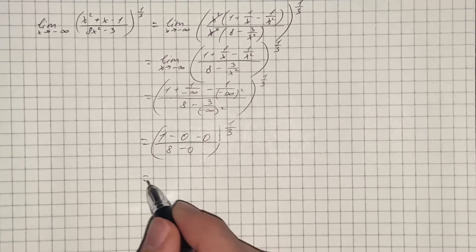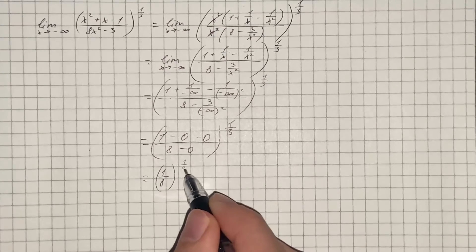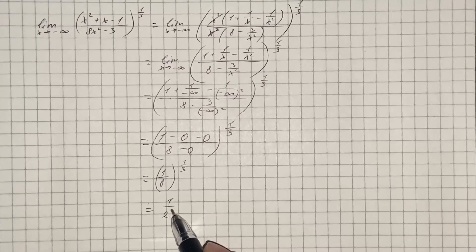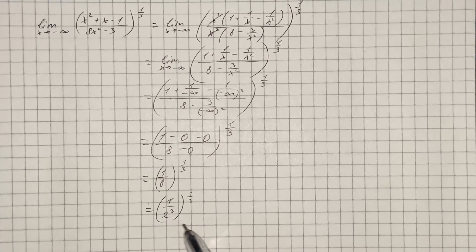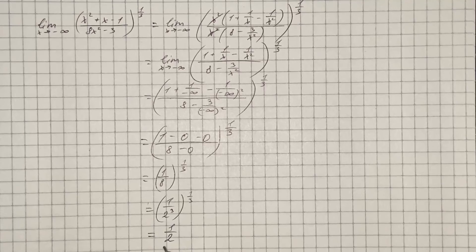So that's going to be 1 over 8 to the power of 1/3, and we can rewrite 8 as 2 cubed. After simplifying we get 1/2, and that's our answer.